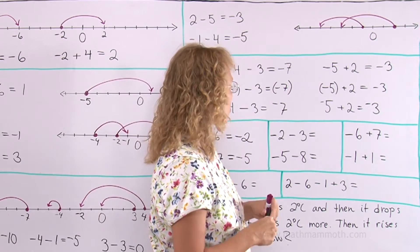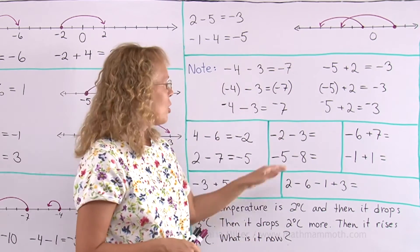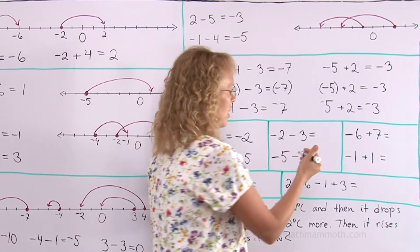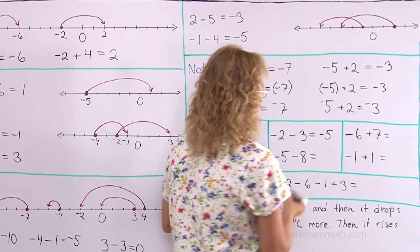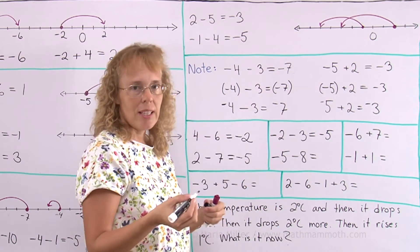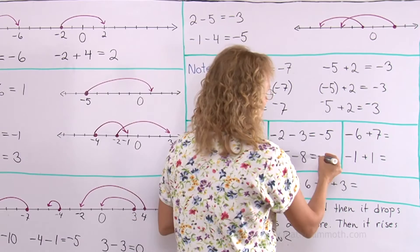Negative 2 minus 3. You're at negative 2 and you go 3 steps further into the negatives. So that is negative 5. The same happens here. Basically you add 5 plus 8 equals 13. But that's all in the negatives.